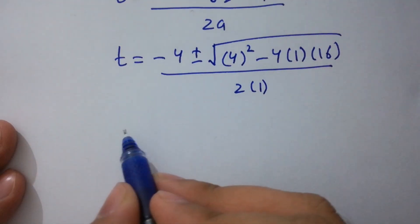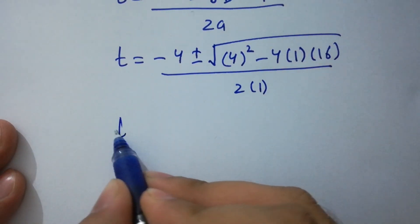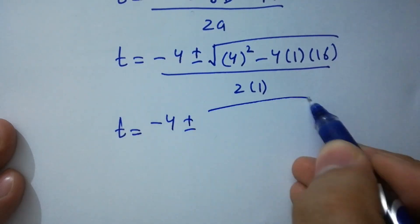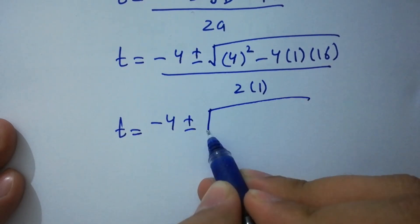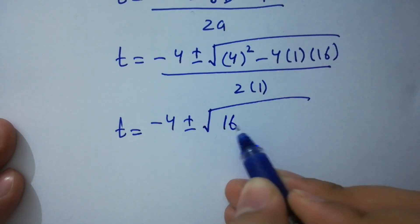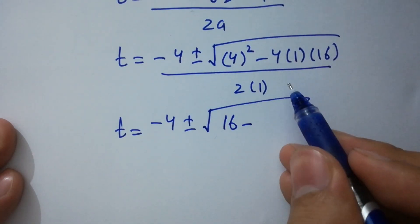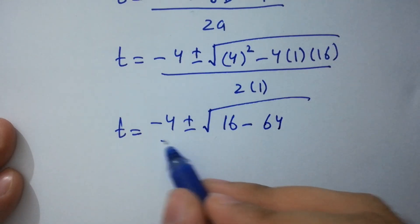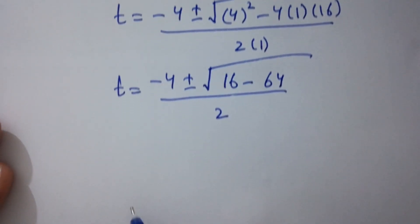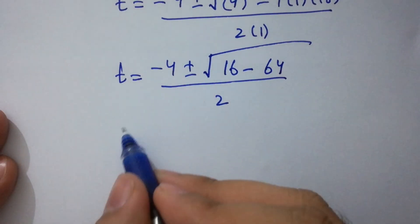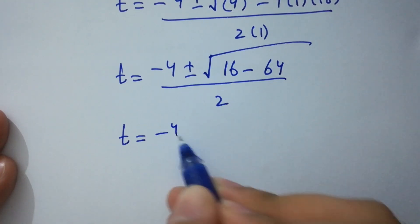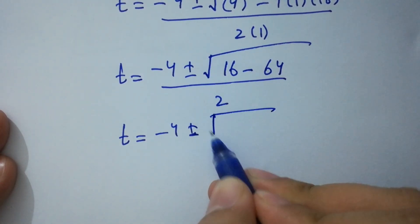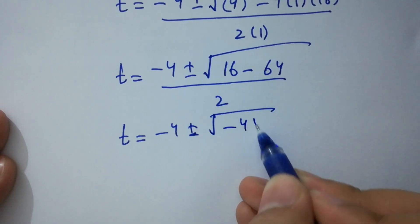We have t equals minus 4 plus or minus square root of 4 times 4 which is 16, minus 4 times 4 which is 16, giving 16 minus 64, over 2. So t equals minus 4 plus or minus square root of 16 minus 64, which gives minus 48, over 2.